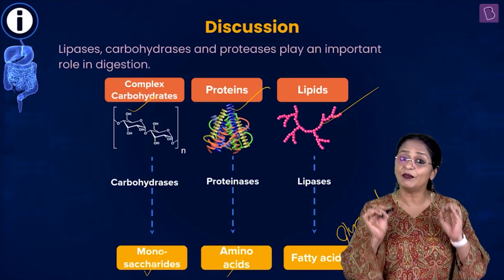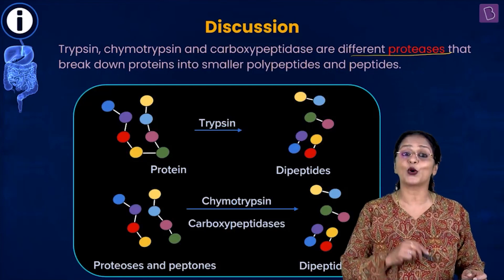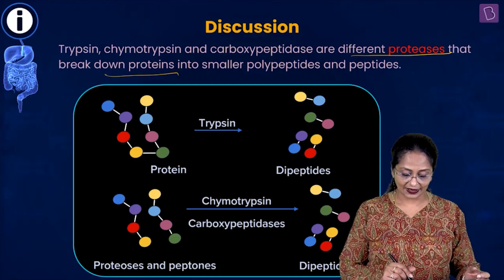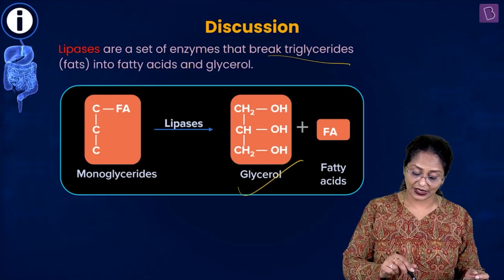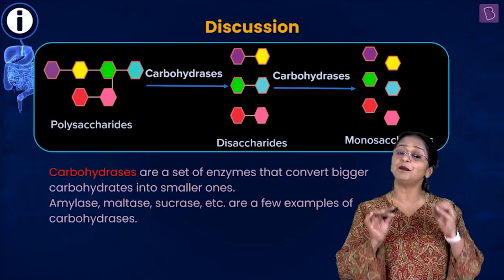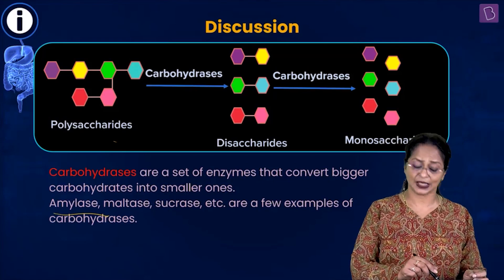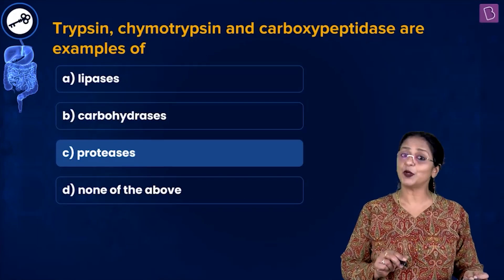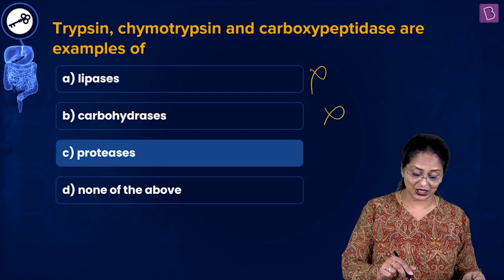Trypsin, chymotrypsin, and carboxypeptidases are different types of proteases — they help in breaking down proteins into smaller polypeptides and peptides. Lipases break down triglycerides into diglycerides, monoglycerides, and finally glycerol and fatty acids. Carbohydrases break down complex sugars such as polysaccharides into disaccharides and then monosaccharides; examples include amylase, maltase, and sucrase.